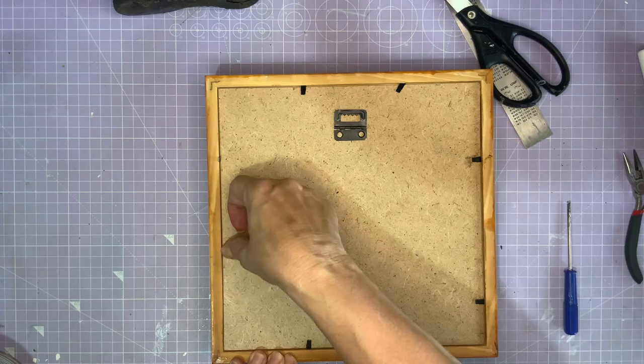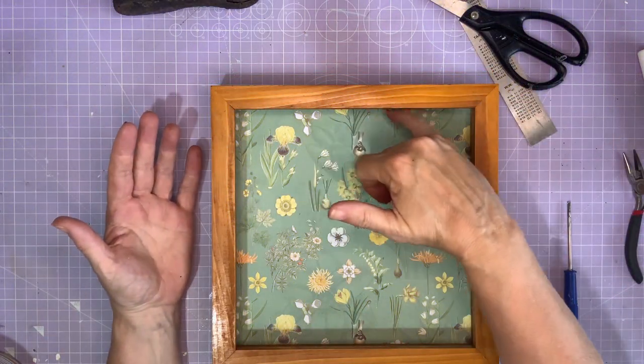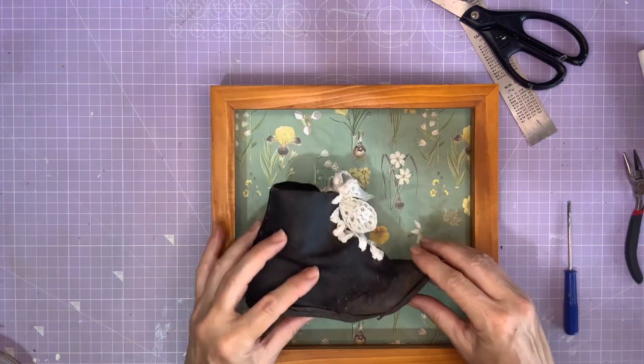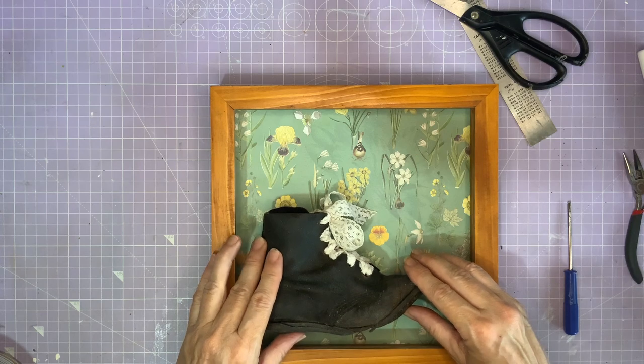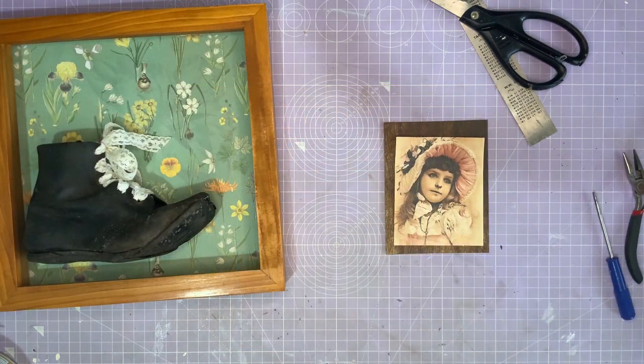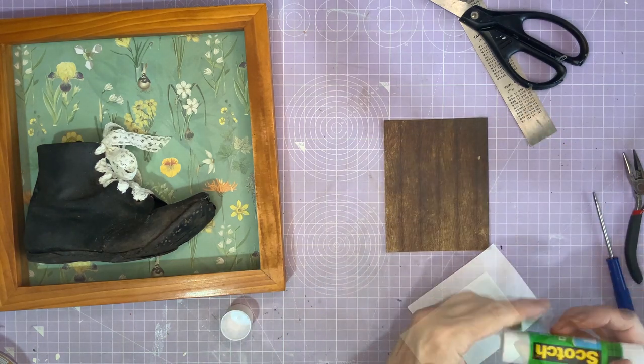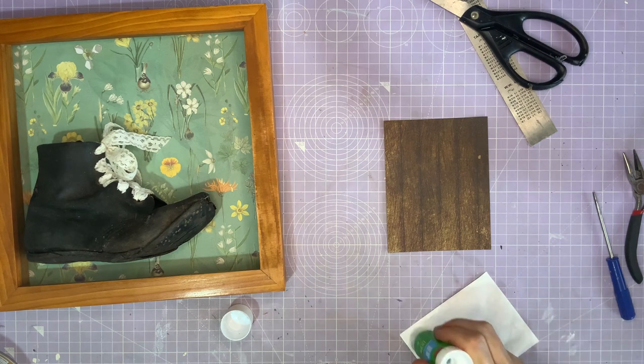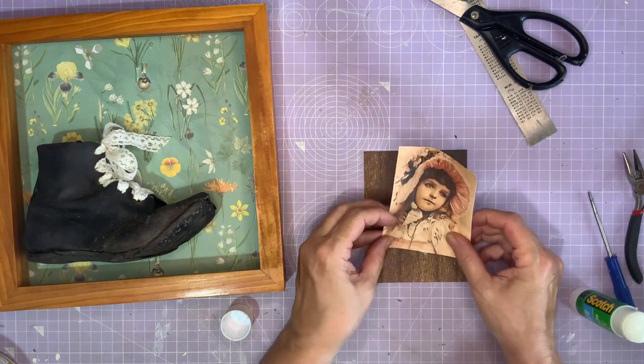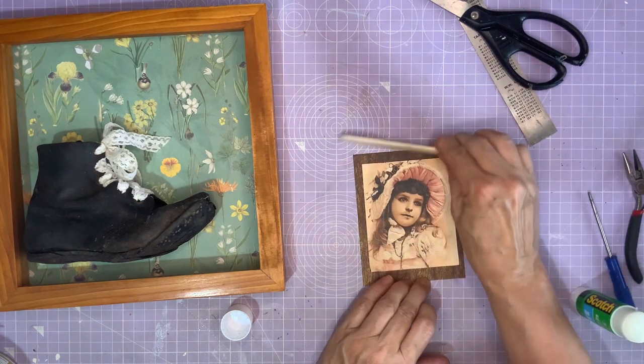Don't worry I haven't gone completely bonkers. Because I do know that I haven't stuck anything on the backboard yet. And now I can see what I'm doing. Because I didn't know exactly where the edge was. And I think it's important to get this fairly central. So I'm going to be sticking the boot there. And in the top corner I'm going to stick this picture of a pretty Victorian girl.